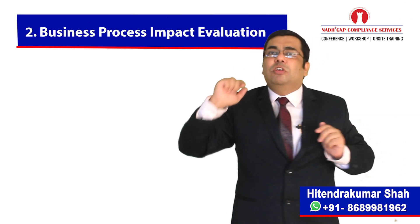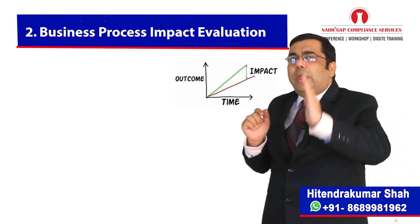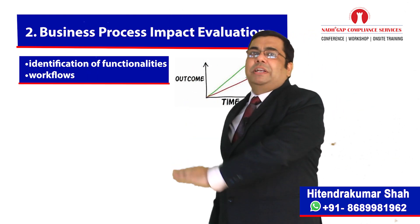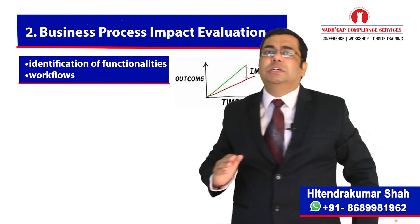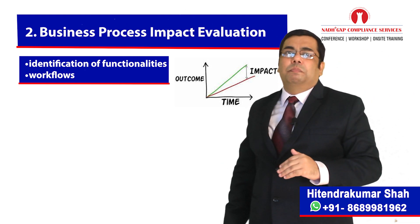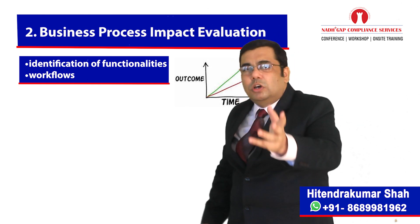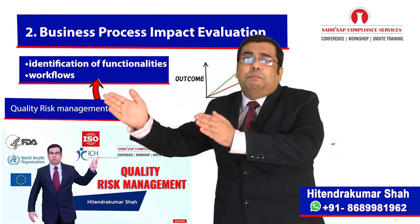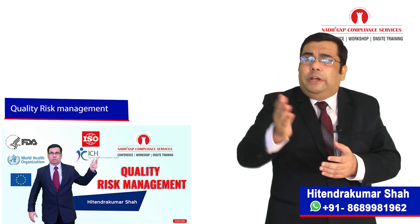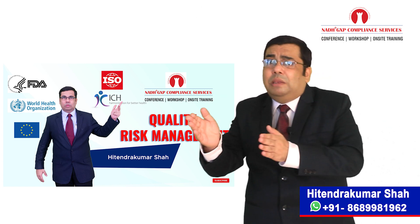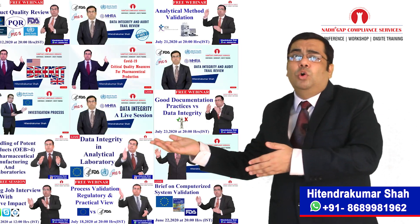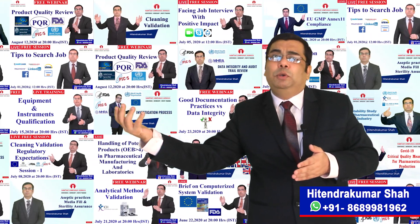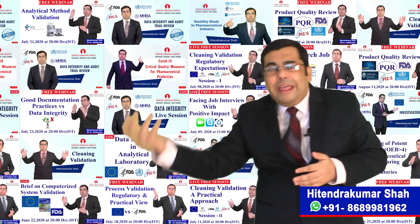The next element is business process impact evaluation. Under this element, we have to study the business process impact considering the identification of functionality or workflows potentially affected by system unavailability, as well as business functions and their dependencies impacted — for example, number of entities, users, geographical area impacted. We can make use of the quality risk management process for this evaluation. If you want to learn quality risk management, you can go through another video on our free learning platform.